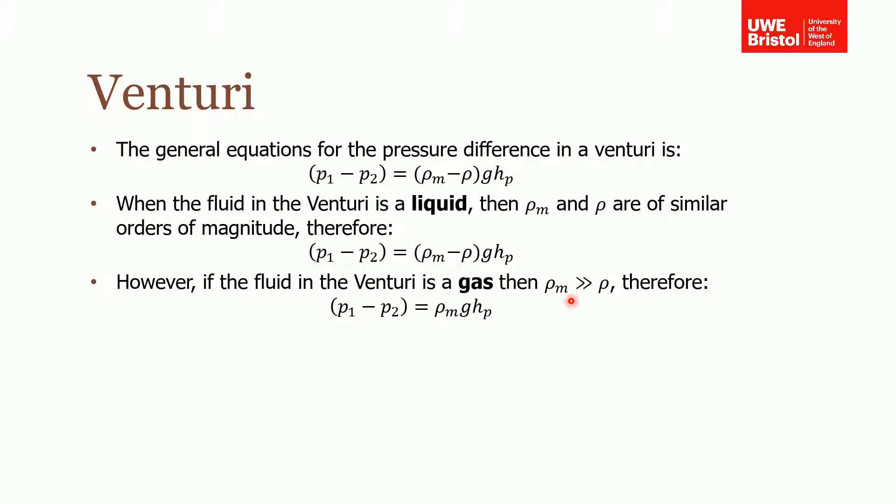However, if the fluid in the venturi is a gas, then the density of the manometer fluid is likely to be much higher than the density of the gas. So if this was water, it would be a thousand, which is much much greater than 1.2. Therefore we can neglect the hydrostatic pressure from the gas and this term disappears. So we can just use this if it's a gas in the tube.